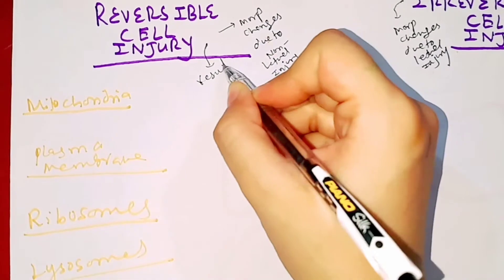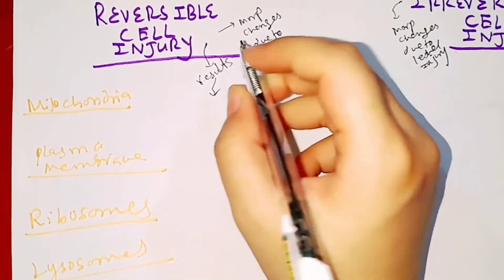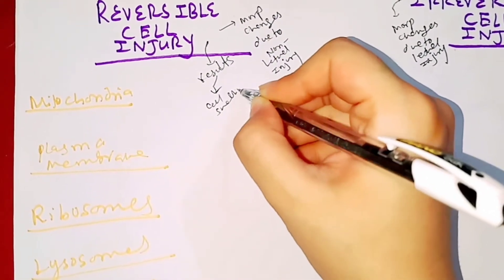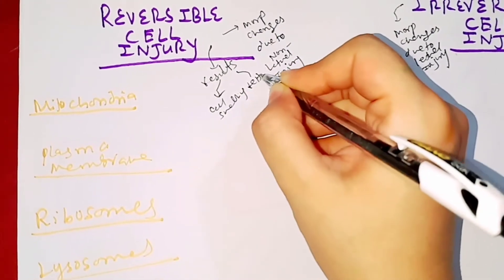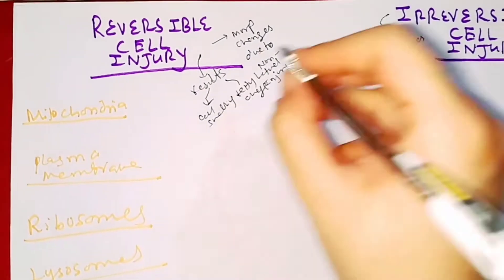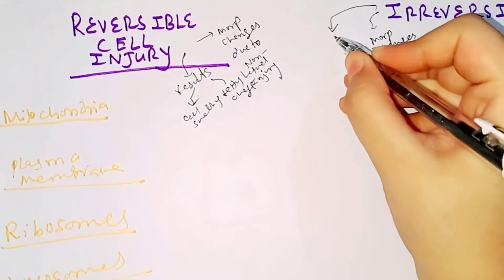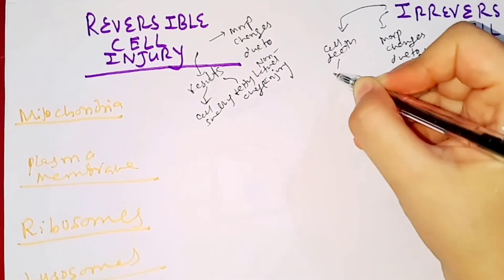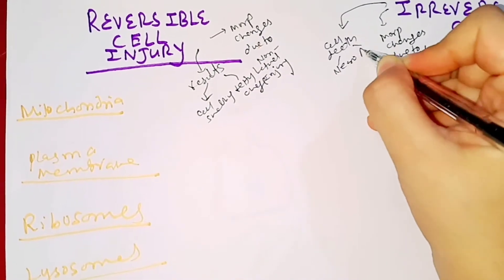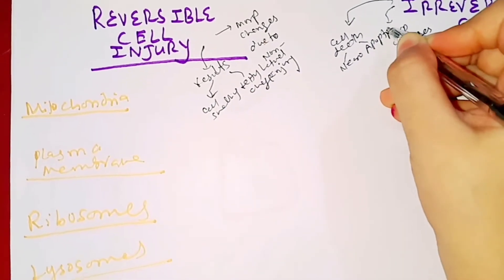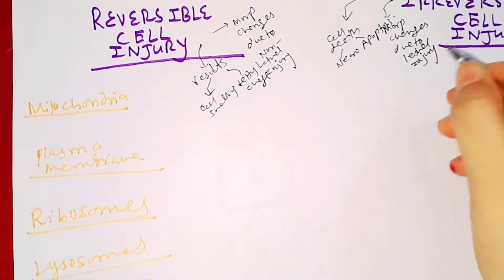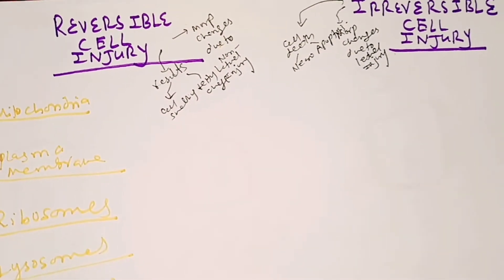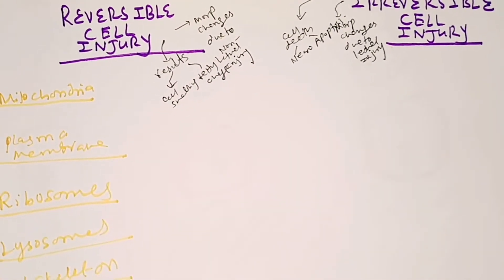Reversible cell injury results in cellular swelling and fatty change, while irreversible cell injury results in cell death — it can be necrosis or apoptosis. These are the main differences between the two. Now let's look at how the changes in organelles differ from each other.